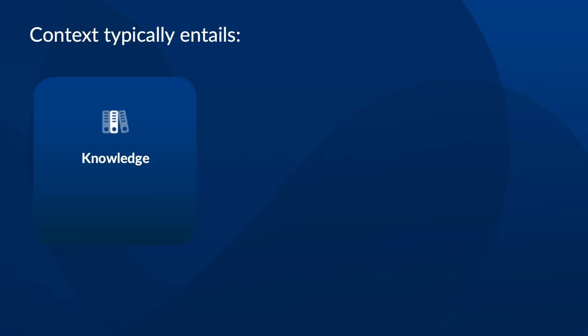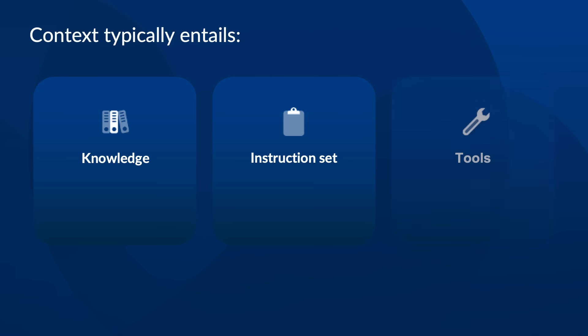Every model has a context window and they can only handle so much information. We've talked in previous episodes about retrieval augmented generation, and that is part of this — being able to provide the agent the knowledge it needs. When we're talking about context, we're typically talking about things like knowledge — often using RAG to get that knowledge — the instruction set with your objective, and tools.